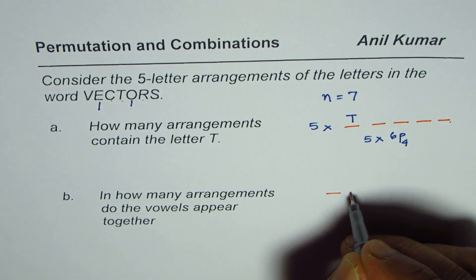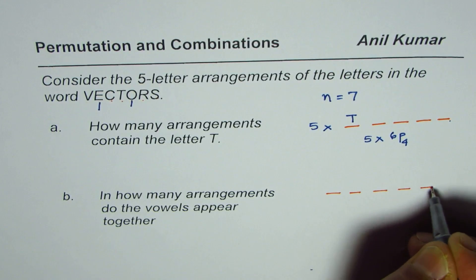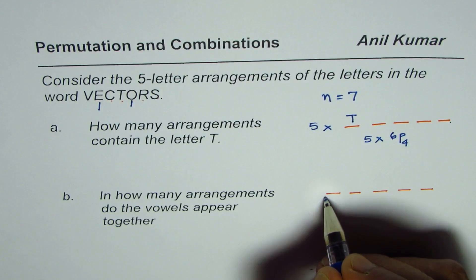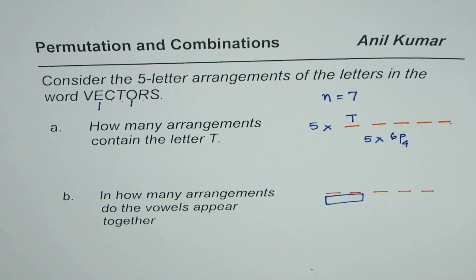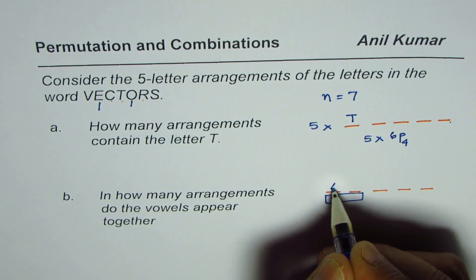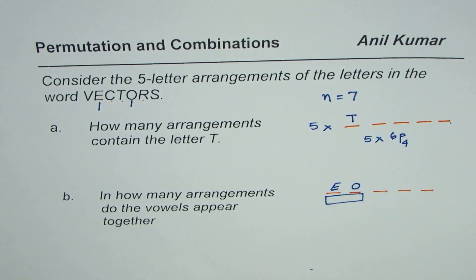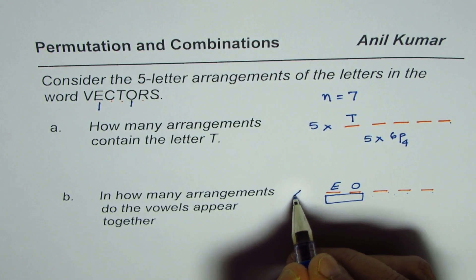Let's say we again have a five-letter arrangement: one, two, three, four, five. And let's say we form a group, and in this group we have these two vowels which are there together, E and O. Now this group could be placed in four different positions. We could have EO here, then two, three, and four. So there are four different positions in which we can place EO. In that case, this should be multiplied by four.